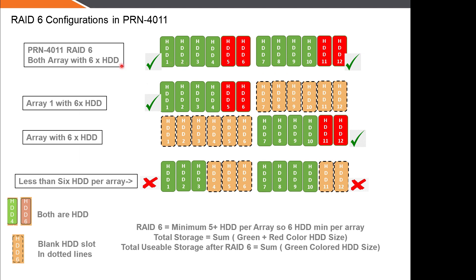In this slide we will see the RAID 6 configuration in PRN-4011. The first option has all 12 slots filled with hard disks — both green and red represent hard disks. This is supported because the minimum is five-plus and there are six hard disks per array. Another option is just one array with six hard disks — also supported. A third option is the first array blank and the second array with six hard disks — also supported.